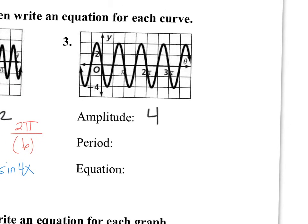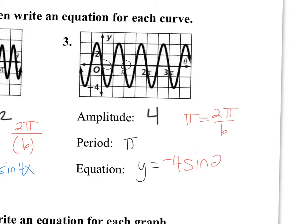Over here, the period is π. So the equation is y equals... now this one goes negative because it's going down. So it's negative 4 sine. I set the period equal to 2π over B, so B has to be 2, giving us negative 4 sine 2x.